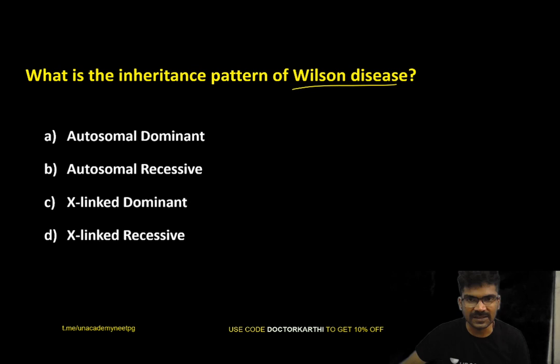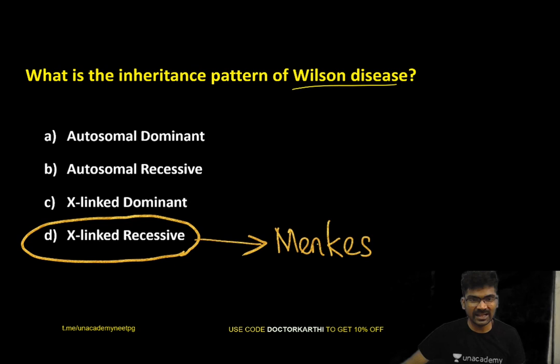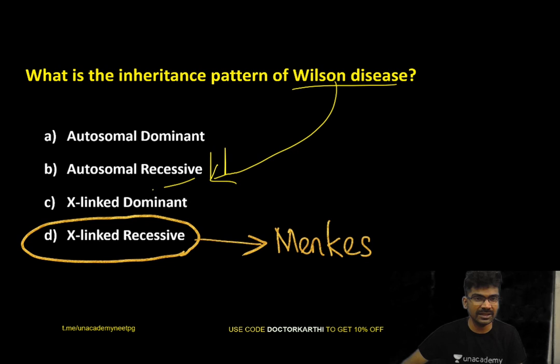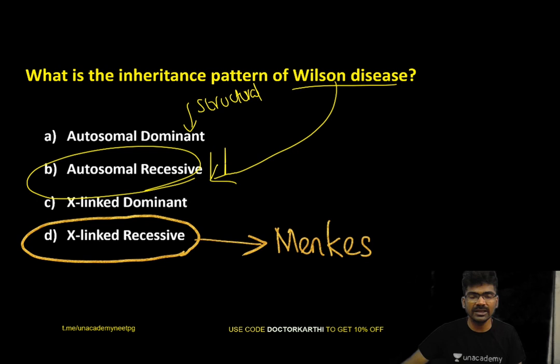What is the inheritance pattern of Wilson's disease? Menkes disease is inherited in an X-linked recessive manner, whereas Wilson's disease is inherited autosomal recessive. Most metabolic disorders are inherited in autosomal recessive manner. Most structural defects like osteogenesis imperfecta are inherited in autosomal dominant disorders, with certain exceptions.